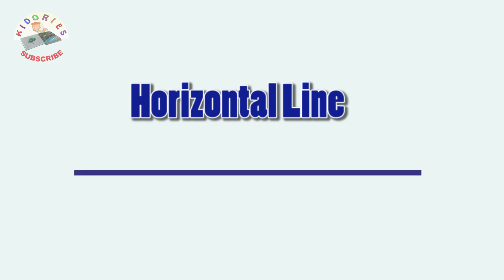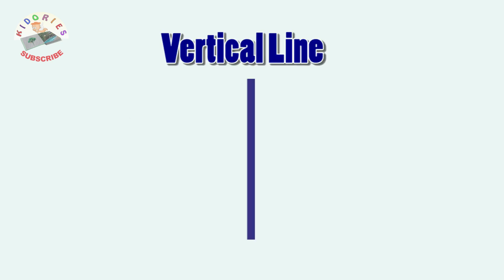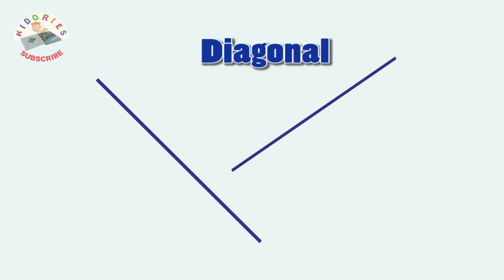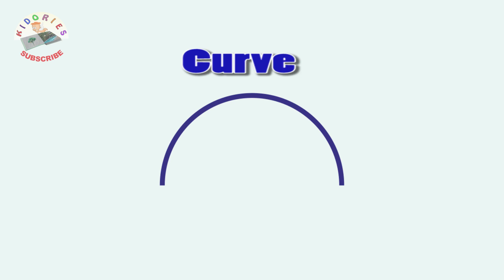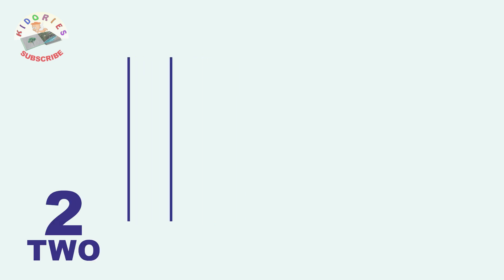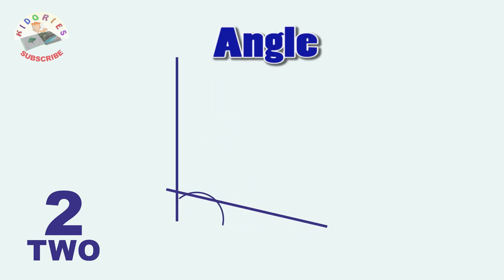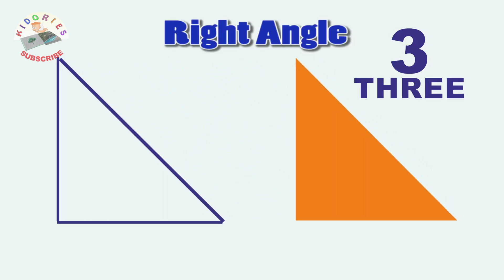Horizontal line, vertical line, diagonal lines, curve, one line, two lines. Two lines make an angle. Three lines, three lines make a right angle.